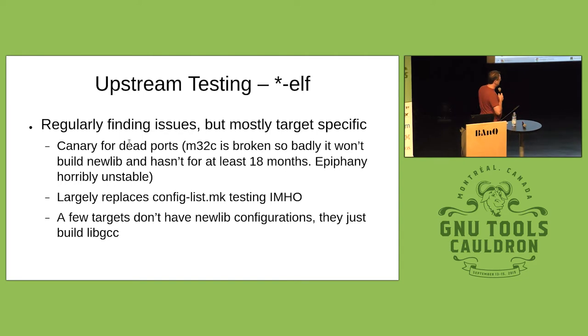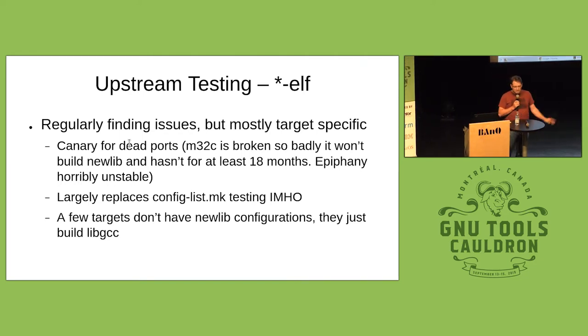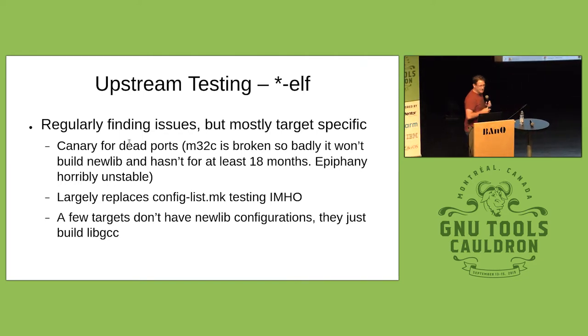In my opinion, this replaces everything we used to do with config.list.mk but it's all automated. There are a few targets that don't have newlib configurations where we just build libgcc and say we're done. Vax — does anybody care about the Vax port?